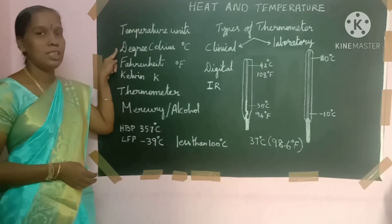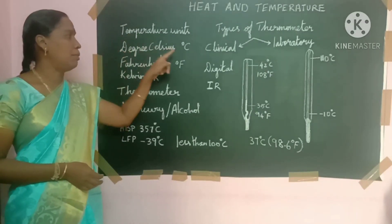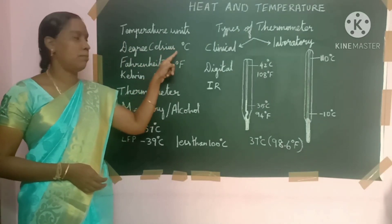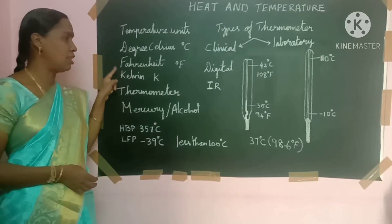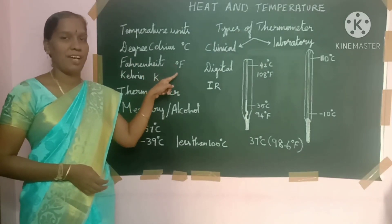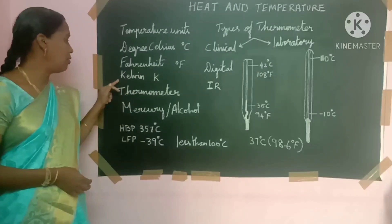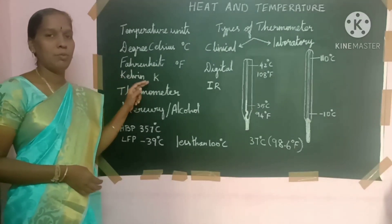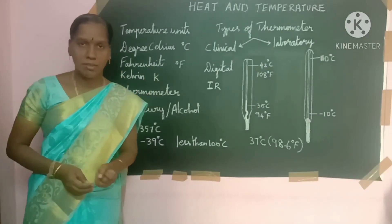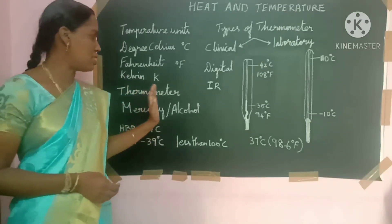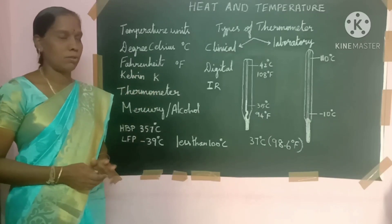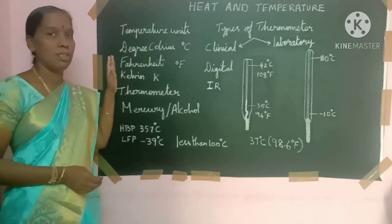The first temperature scale is degree Celsius. The second is degree Fahrenheit — the freezing point of water is 32 degrees Fahrenheit. The third scale is Kelvin, which uses the unit symbol K. These are the temperature units, and you will study them in more depth in the next class.